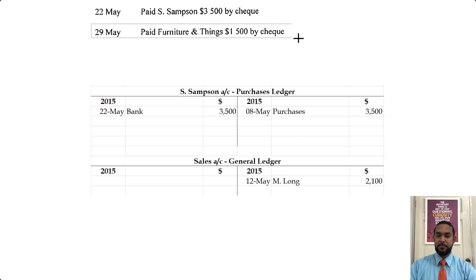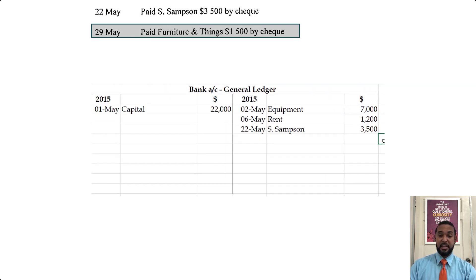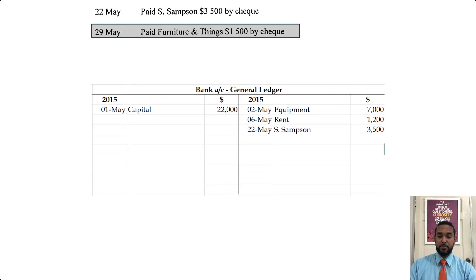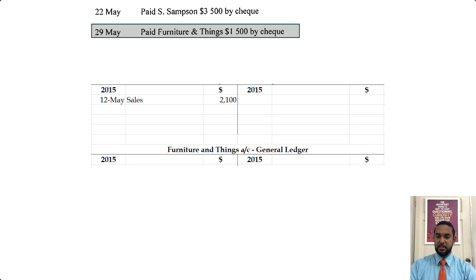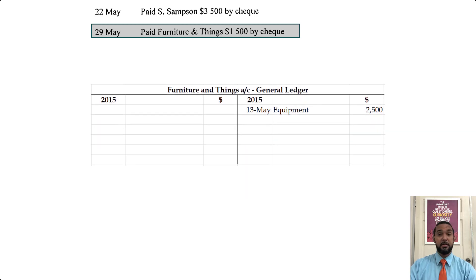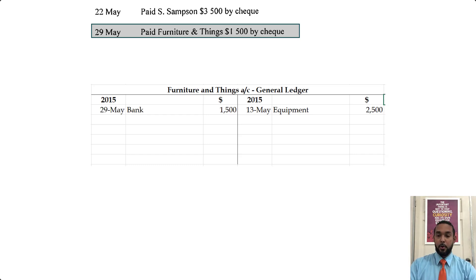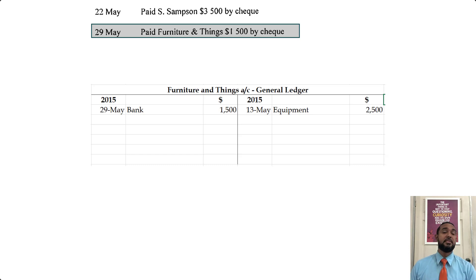Finally, we paid Furniture and Things $1,500 by check. We credit bank because we're paying by check — money is coming out of bank, the asset is decreasing, so you credit the asset account. Furniture and Things is a creditor — if you're paying back your creditor, you are reducing the amount of money you owe, thereby reducing the liability, which means you debit that account. Money is coming from bank, credit where it's coming from, and it's going to Furniture and Things, debit where it's going.